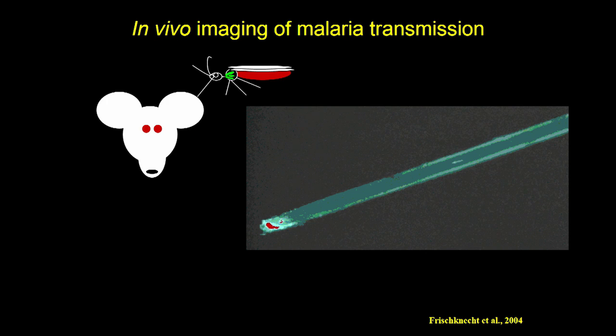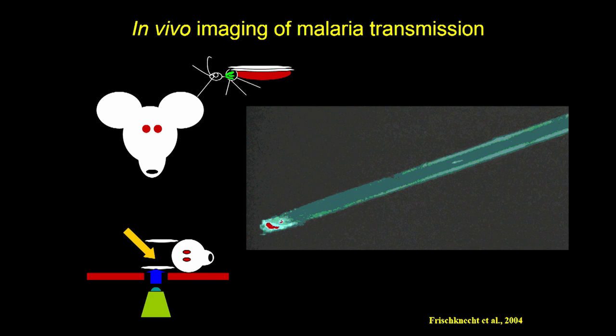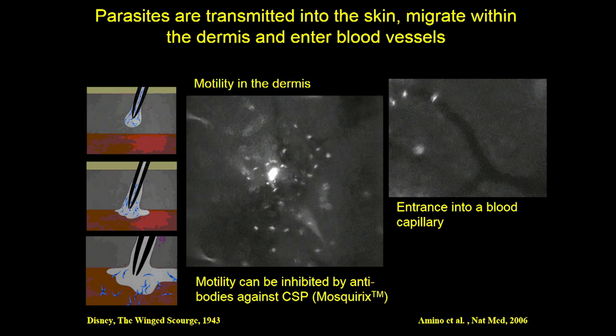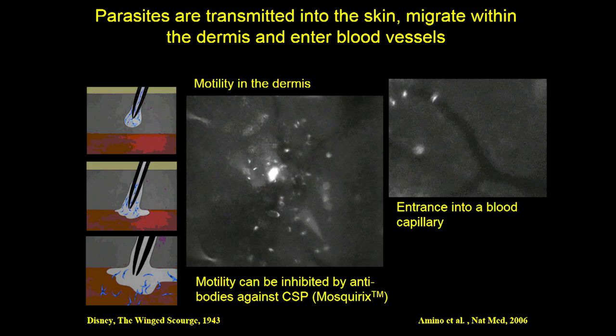When you don't let it salivate onto your microscope, but you let it bite a mouse and then put the mouse in the microscope, you can luckily see parasites that are moving in the skin. The parasites are not transmitted in the blood, as Walt Disney thought, but they're transmitted like pathogens transmitted by ticks — into the skin. They move at this incredible speed, about 10 times faster than the cells of the immune system that try and catch them.